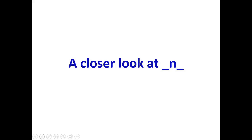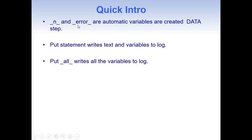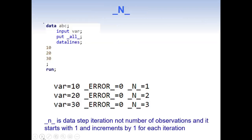Hello everyone, welcome to my channel. If you have not already subscribed, please do subscribe. Today's topic is a closer look at _N_ and _ERROR_. To give a brief introduction: _N_ and _ERROR_ are automatic variables — they are created during the data step and are available during the PDV only. They are not written to the output data set. The PUT statement writes text and variables to the log, and PUT _ALL_ writes all variables to the log.